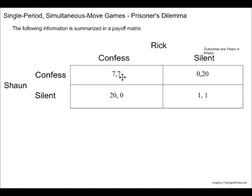Rick choosing to confess when Sean chooses to confess will produce for Rick seven years in prison as well. If Rick chooses to confess but Sean remains silent, Sean is going to get 20 years in prison, whereas Rick will get zero years in prison.